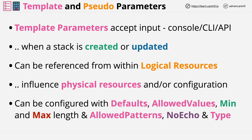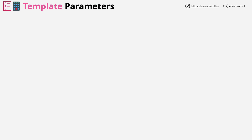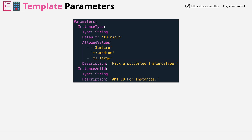You're going to be getting some practical experience working with parameters in a future demo video. For now, I just want you to have a basic awareness. Visually, parameter architecture looks like this. Parameters start by being defined within a CloudFormation template — I've defined two parameters here: instance type, which is a string,